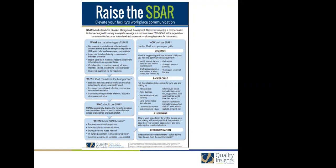How does it work? It's really super easy — the acronym itself guides you in its use. S is for Situation: what is happening that causes the need for the communication? B is for Background: this is where you put the current situation into context. A is for Assessment: you are the person with eyes on the situation — this is your opportunity to tell the person what you're seeing and what you think is causing the issue. And R is for Recommendation: this is when you get to suggest what you're hoping to gain from the conversation.